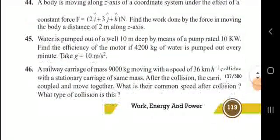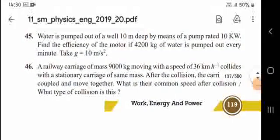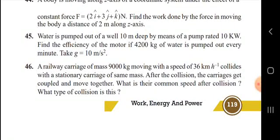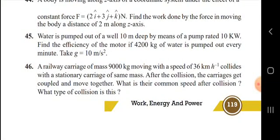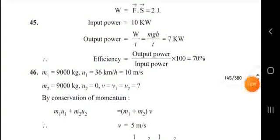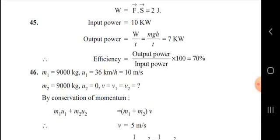Numerical: Water is pumped from a well 10 meters deep by a pump rated 10 kilowatts; 4200 kg of water is pumped every minute (g = 10 m/s²). Input power = 10 kW. Output power = mgh/t = 7 kW. Therefore efficiency = 7/10 = 70%.